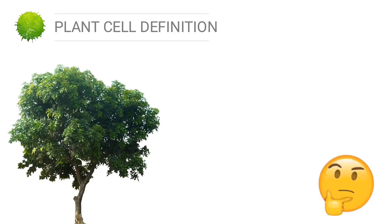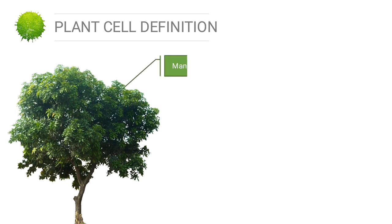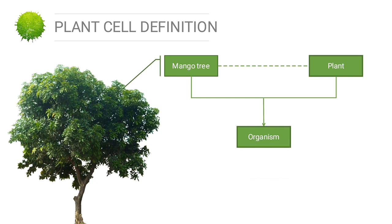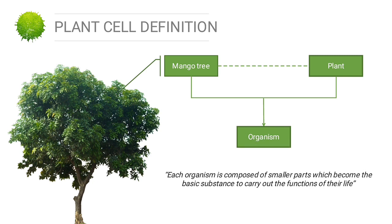Please look at the picture. What do you see? The picture shows a mango tree. As we know, a mango tree is an example of a plant we see every day. Either the mango tree or the plant itself is an example of an organism living on Earth. In biology, each organism is composed of smaller parts which are the basic substances that carry out the functions of life.